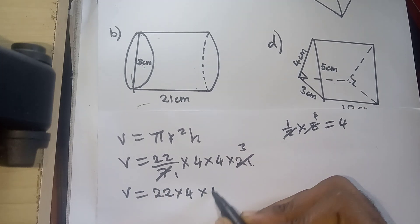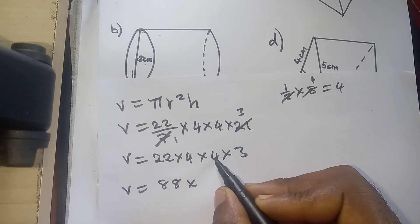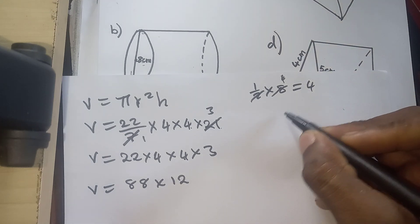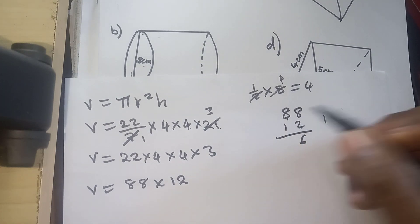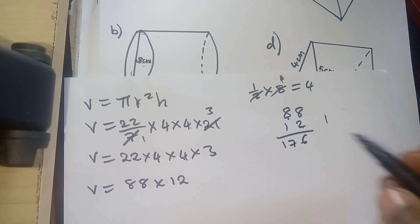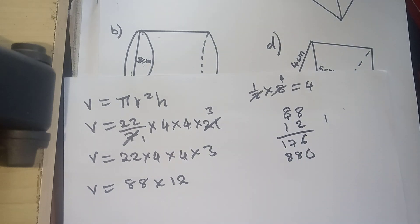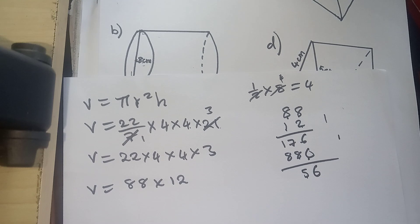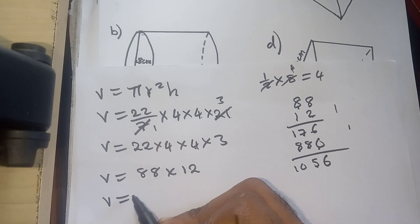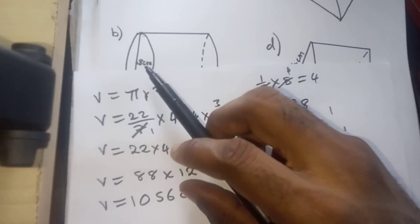So we have 22 multiplied by 4 multiplied by 4 multiplied by 3. Let's multiply: 22 times 4 is 88, then 4 times 3 is 12. Now multiply 88 by 12: 2 times 8 is 16 carry 1, 2 times 8 again is 16 plus 1 is 17, then 1 times 8 is 8, and 1 times 8 is 8. Working through the addition gives us 1056. So the volume is 1056 cubic centimeters.